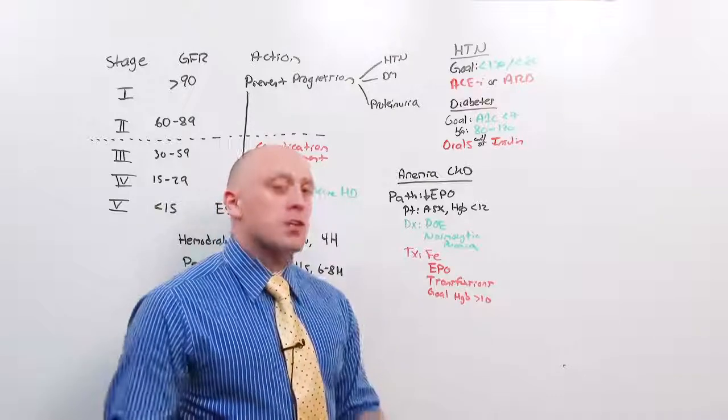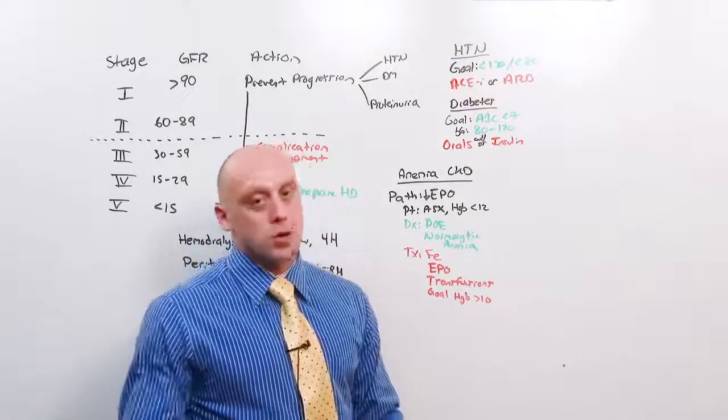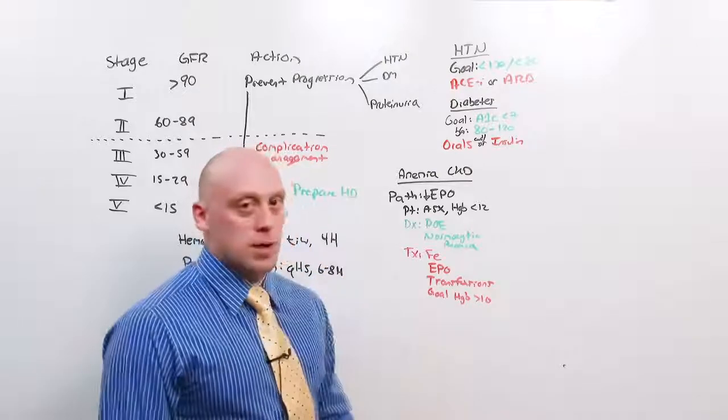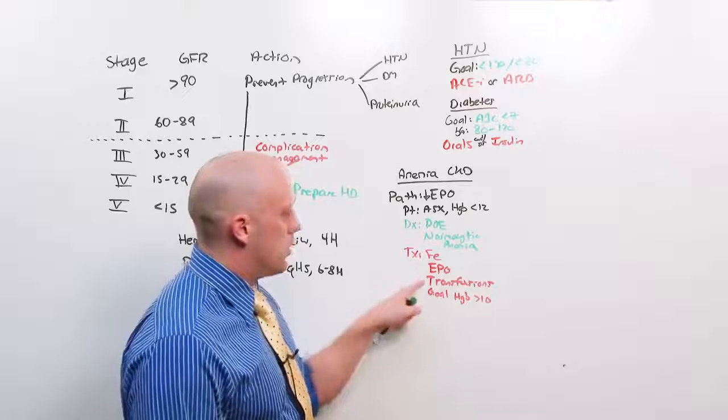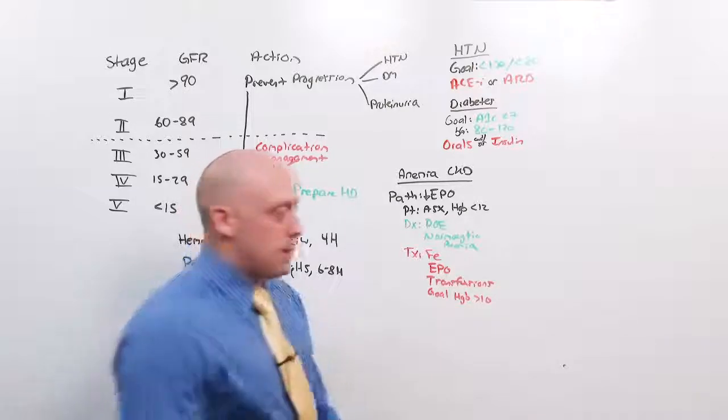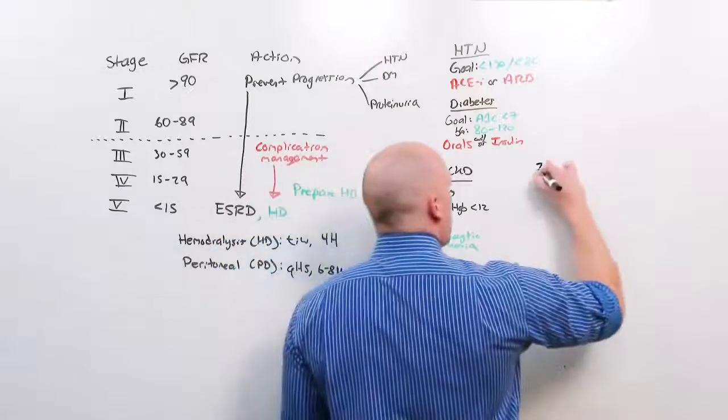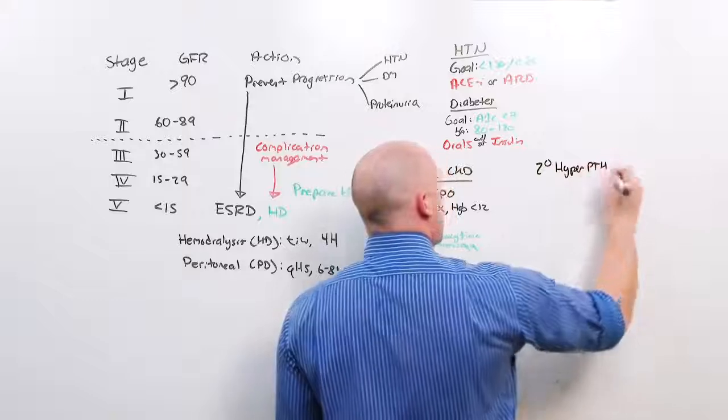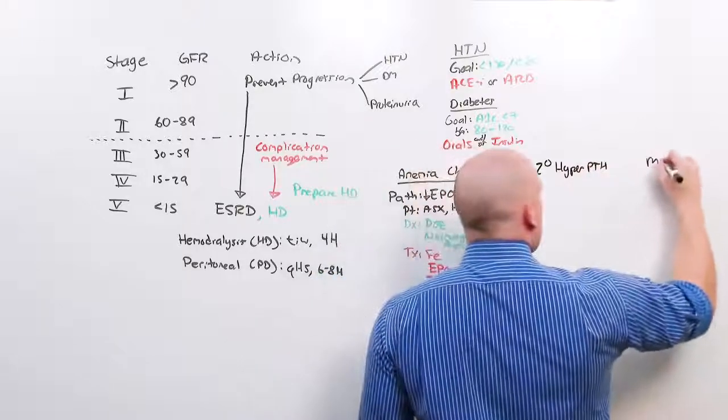Now also notice what's not up here. EPO is not a diagnostic step. Don't be fooled. If they've got chronic kidney disease, and you've ruled out nutritional deficiencies, and they have a normocytic anemia, it's anemia of chronic kidney disease. Treat them with iron, EPO, and transfusions as needed.